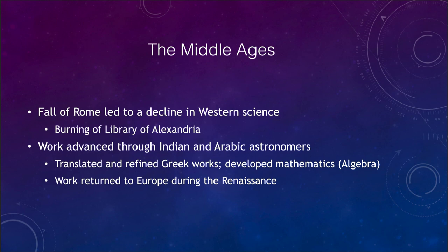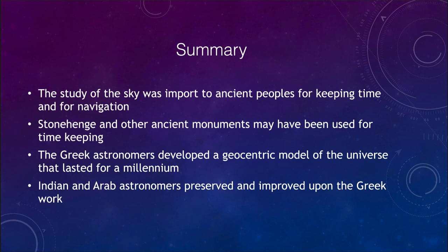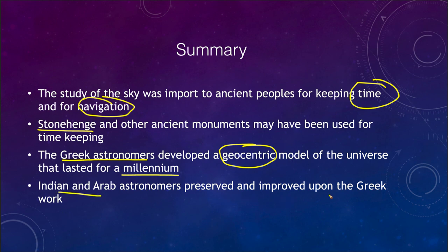Let's finish up here with our summary. What have we learned? We looked at how the study of the sky was important for time keeping and navigation. We looked at Stonehenge as one ancient monument, but there were a lot of others around the world that did similar things and were used for time keeping. We looked at the Greek astronomers who gave us the geocentric model of the universe, and that was our model that explained planetary motions for over a thousand years. And finally, Indian and Arab astronomers preserved and improved upon the Greek work, which then came back to Europe with those modifications and improvements during the Renaissance. That concludes our discussion of ancient astronomy. We'll be back again next time for another topic in astronomy. Until then, have a great day everyone and I will see you in class.